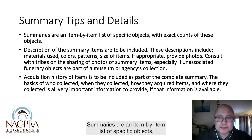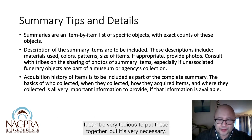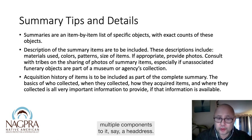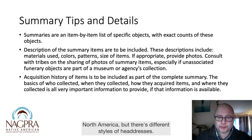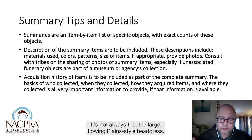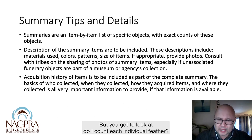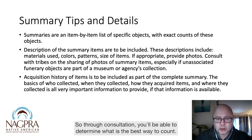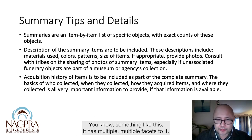Summaries are an item-by-item list of specific objects with exact counts. It can be very tedious to put these together, but it's very necessary. Going through the summary process, you've got to look at whether an item has multiple components — say a headdress. Headdresses are very common for tribes across North America, but there are different styles. It's not always the large flowing plains-style headdress; some are very small with just a few feathers. You have to consider: do I count each individual feather, or are they all part of this one item? Through consultation, you'll be able to determine the best way to count something like this.